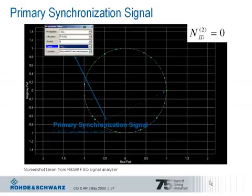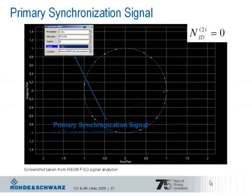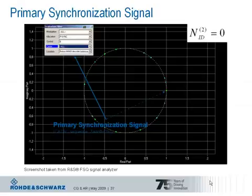By using the evaluation filter function of the Rohde and Schwarz FSQ signal analyzer, you can look at each subcarrier individually. For the three different physical layer identities, three different sets of two sequences have been selected which have shown the best behavior. The one displayed in the constellation diagram is the sequence for identity number 0. Match filtering generally works by correlating the received signal with the possible sequences for the primary synchronization signal.